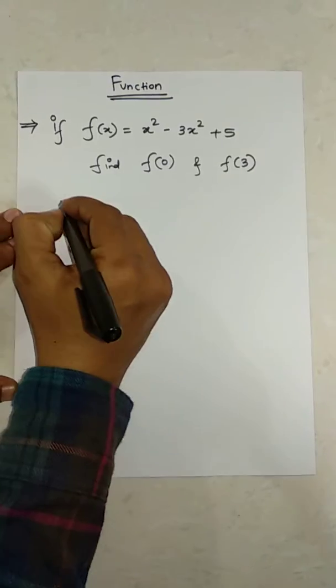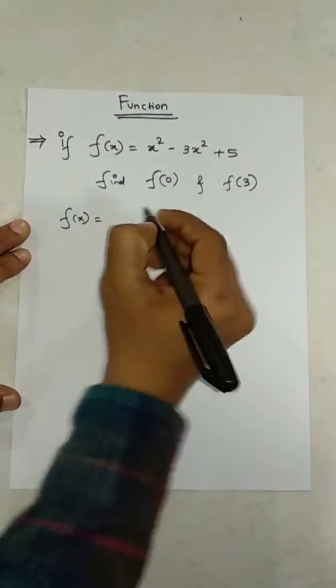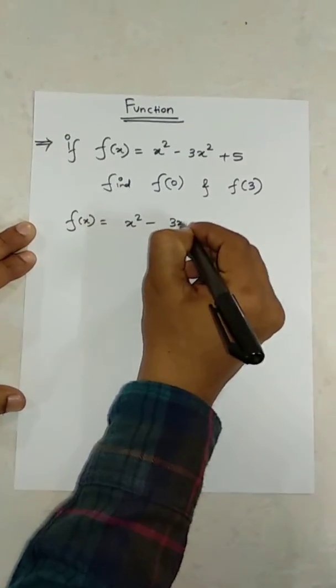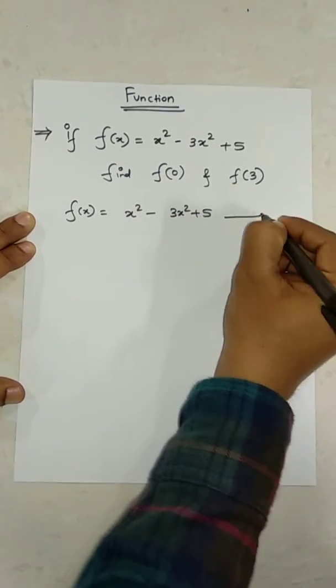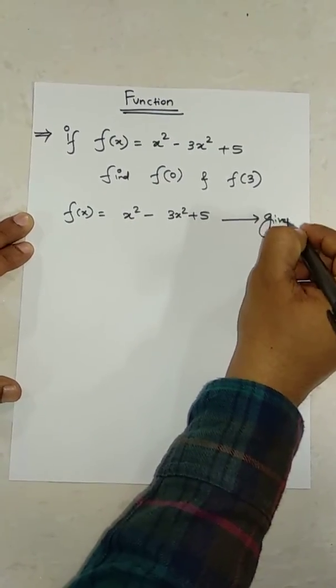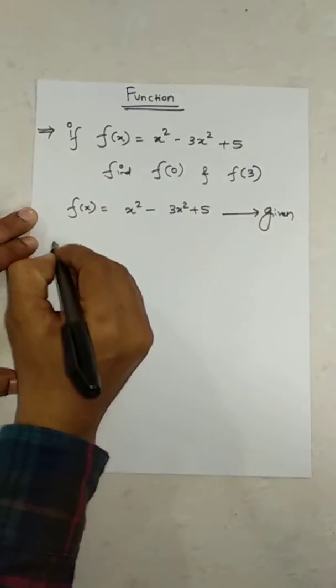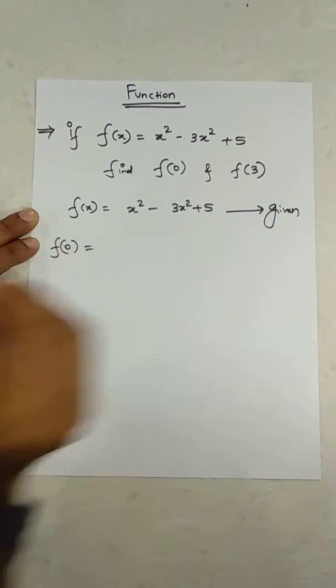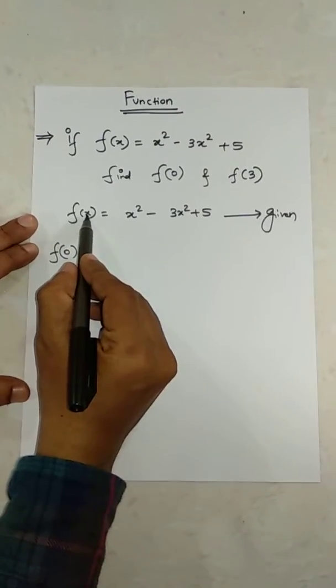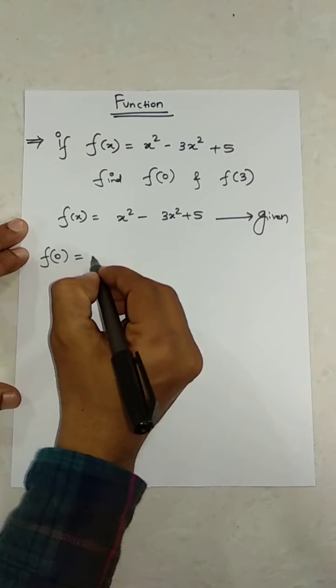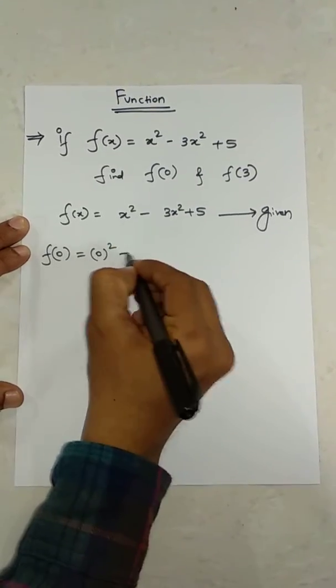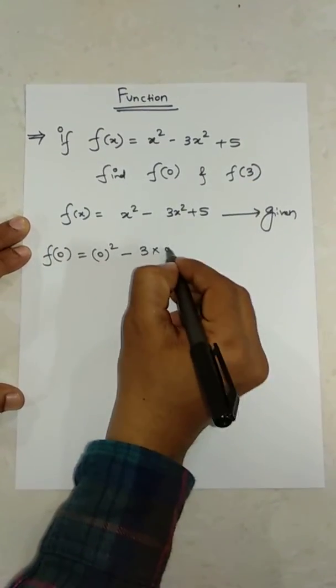f(x) is equal to x² minus 3x² plus 5. Now, f(0) is equal to—wherever x is, it will get replaced with 0. So, 0² minus 3 into 0² plus 5.